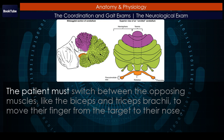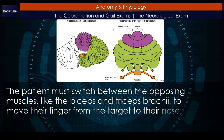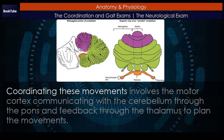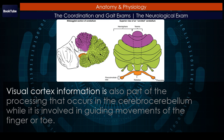The patient must switch between the opposing muscles, like the biceps and triceps brachii, to move their finger from the target to their nose. Coordinating these movements involves the motor cortex communicating with the cerebellum through the pons and feedback through the thalamus to plan the movements. Visual cortex information is also part of the processing that occurs in the cerebrocerebellum while it is involved in guiding movements of the finger or toe.